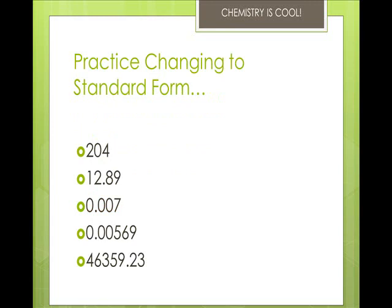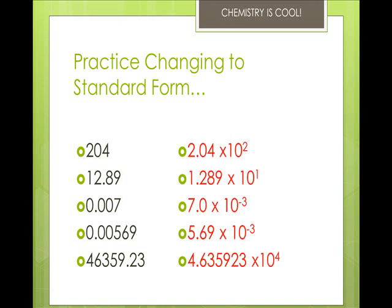So we're going to change these to standard form. 204 is 2.04 times 10 to the 2nd. 12.89 is 1.289 times 10 to the 1st, although when you get to standard form it's a little picky. 0.007 is 7.0 times 10 to the negative 3rd. 0.00569 is 5.69 times 10 to the negative 3rd. And 46,359.23 ends up 4.635923 times 10 to the 4th, which is just moving the decimal point around.